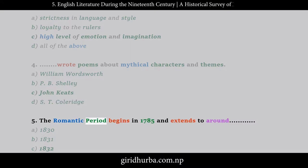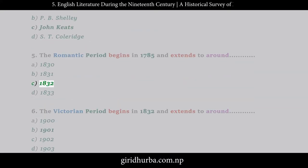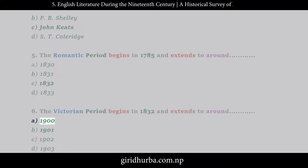Question 5: The Romantic period begins in 1785 and extends to around: A. 1830, B. 1831, C. 1832, D. 1833. Question 6: The Victorian period begins in 1832 and extends to around: A. 1900, B. 1901, C. 1902, D. 1903.